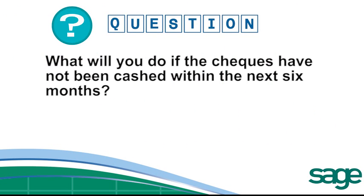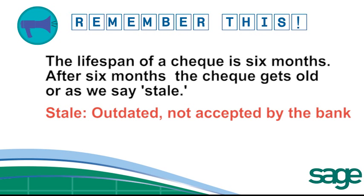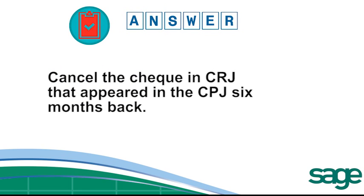What do you do if the cheques are not cashed within the next six months? Remember, the lifespan of a cheque is six months. After six months the cheque gets old — or as we call it, stale. This cheque must then be cancelled in our books. We cancel it by using the cash receipt journal to cancel the cheque that appeared in the cash payment journal a few months back.